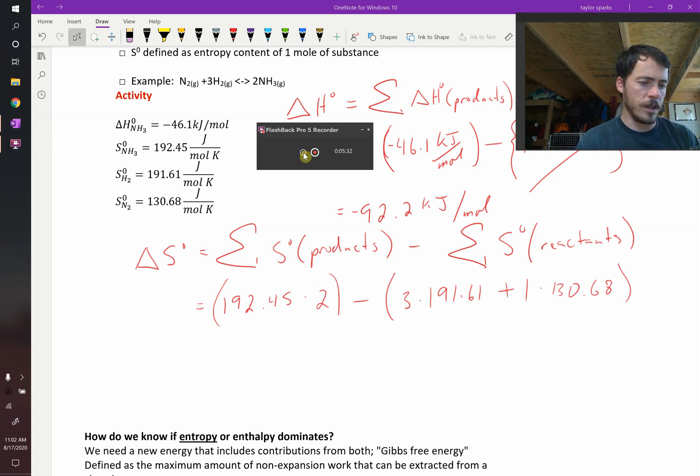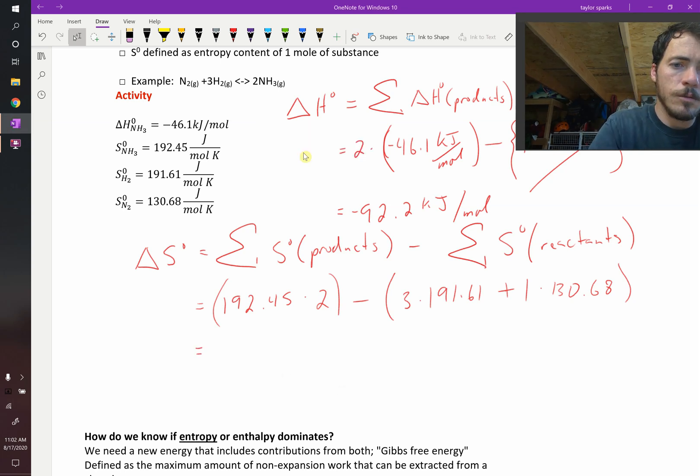So when I punch those into my calculator, I get a value of negative 320.61. So equals negative 320.61, the units on this one are joules per mole kelvin.